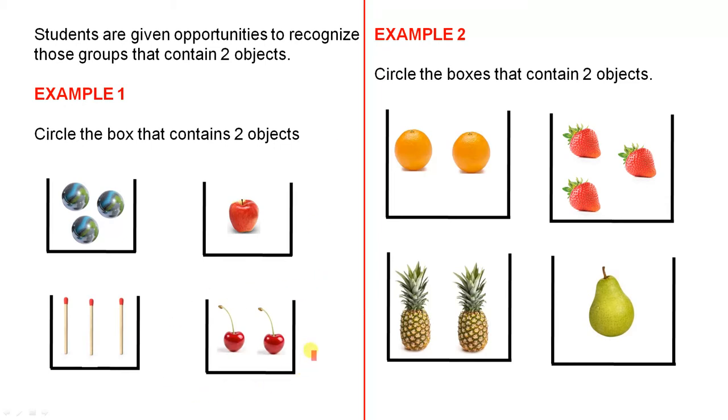And after looking at it carefully, they would obviously circle that box and you'd give them many more opportunities to do exercises like this. Next example, circle the boxes that contain two objects.